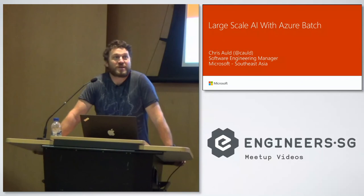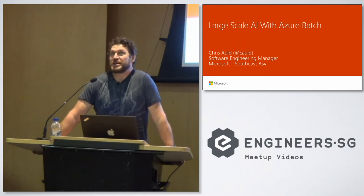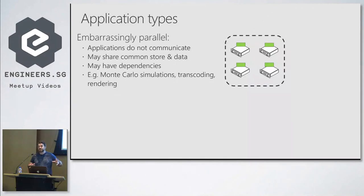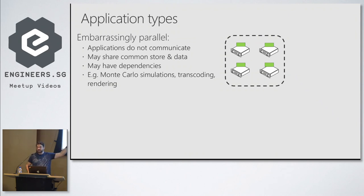I thought I'd come and talk a bit about doing large-scale machine learning. We have a service called Azure Batch, and we have these things called low priority VMs that are super cheap. Even if you've got a really nice workstation at home, there's some cool things you can do with the cloud in terms of doing large-scale training. There are typically two scenarios in high performance compute — the first is what we'd call embarrassingly parallel.